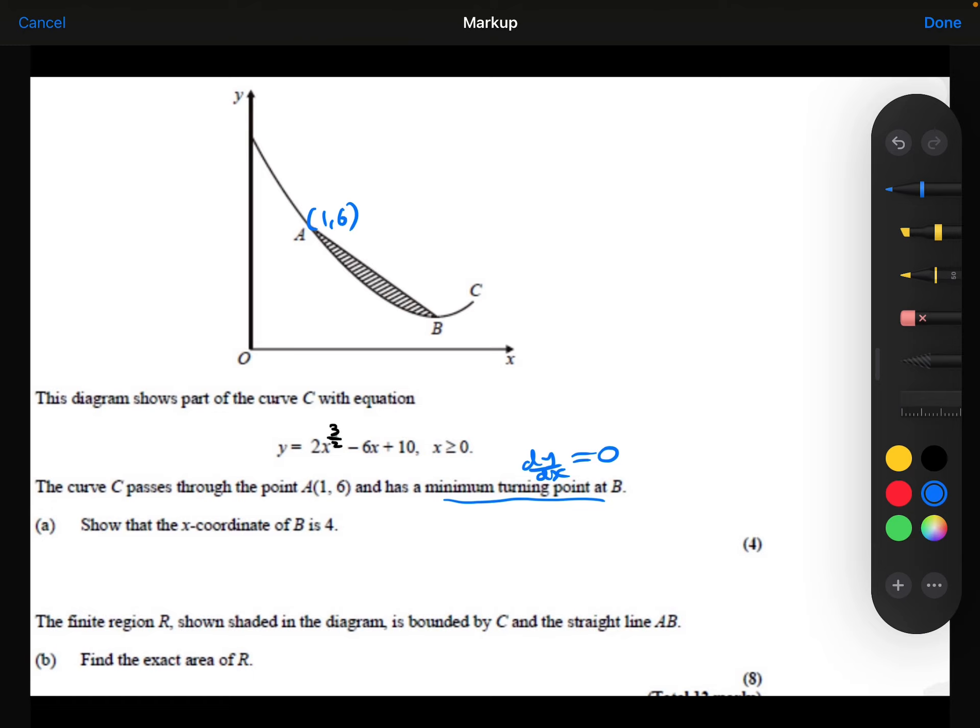Part A, show that the x coordinate of B is 4. Okay, so we are talking about point B, the turning point, so I'm going to differentiate my function and make it equal to 0 to find where the gradient equals 0.